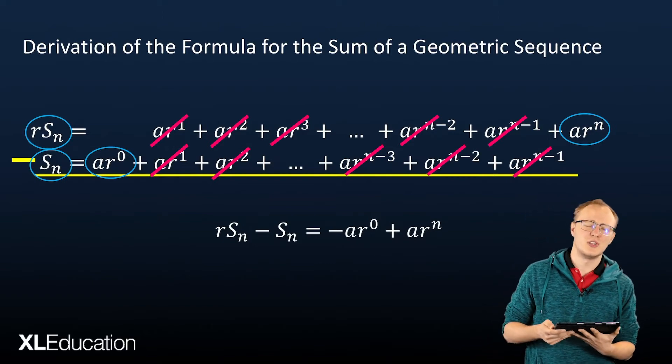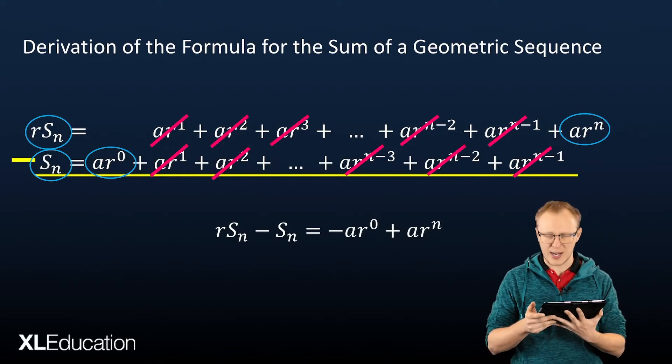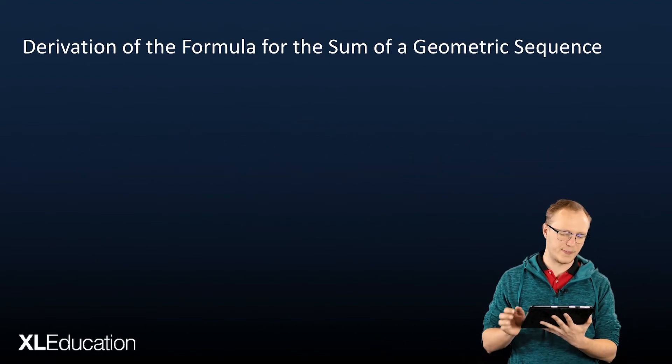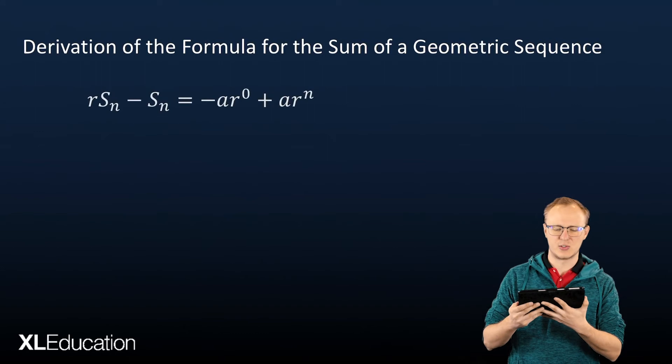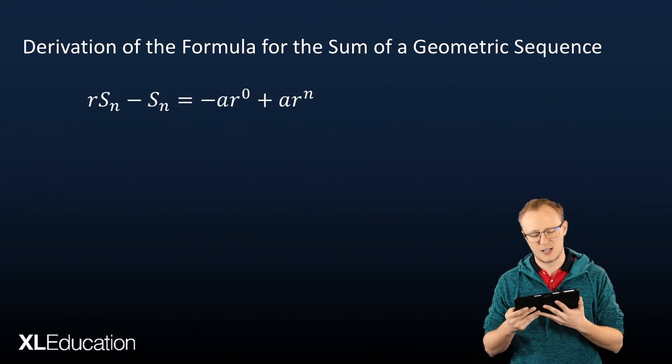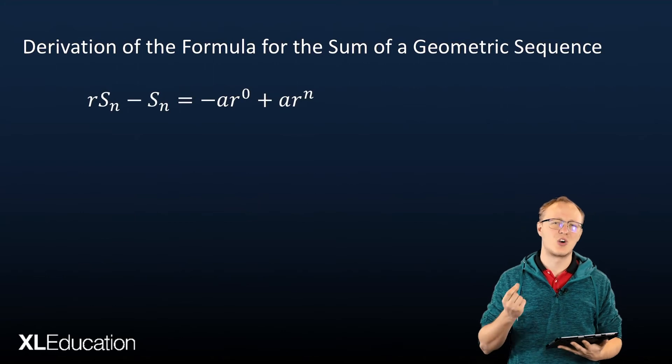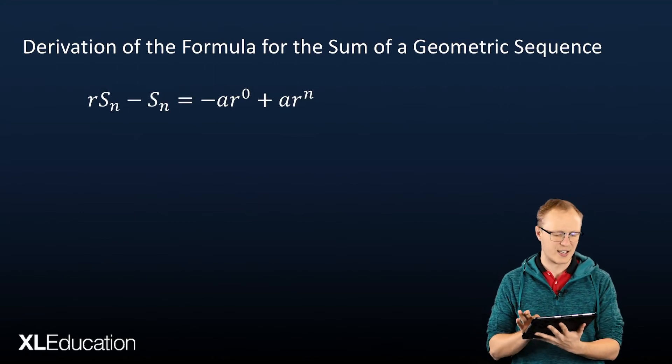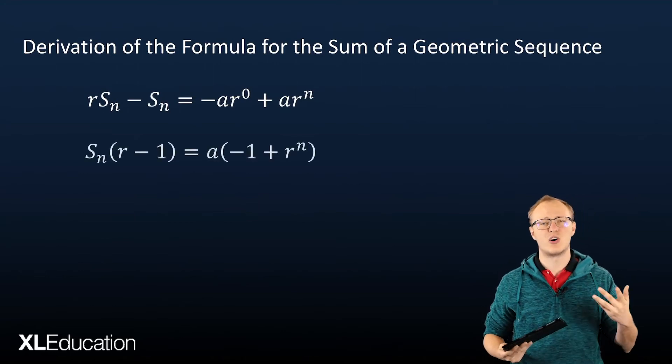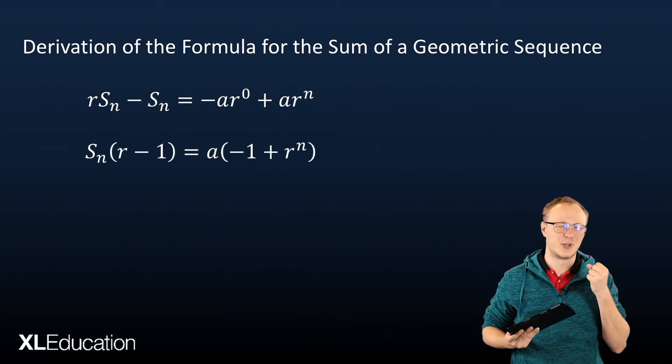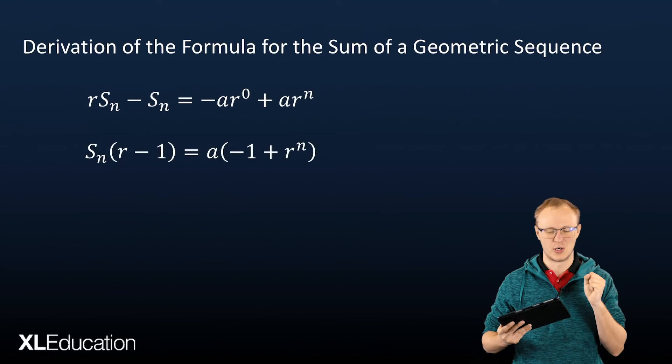And now all we have to do is play a few algebraic games in order to isolate Sn. So we've got rSn minus Sn equals minus ar to the 0 plus ar to the power of n. So first, we're going to take out common factors on either side. So on the left, we take out a common factor of Sn because that's the thing that we actually want by itself. We're trying to isolate that term, the Sn.